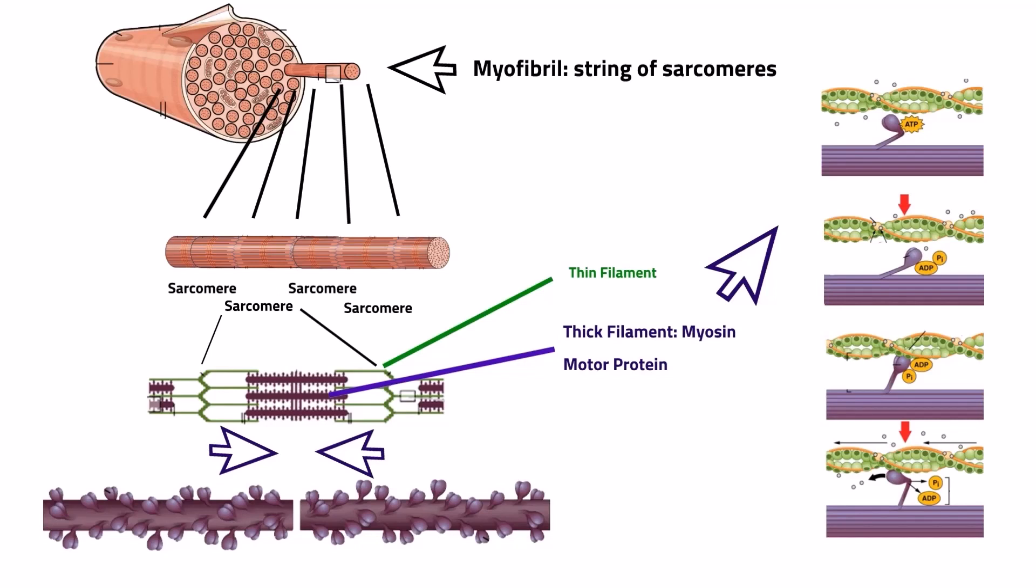When the muscle contracts, all the motor proteins are moving at once, which moves the ends of the sarcomere towards the center. All of the sarcomeres and the muscle fibers shorten at the same time, which means the entire muscle fiber shortens, shortening the muscle organ.